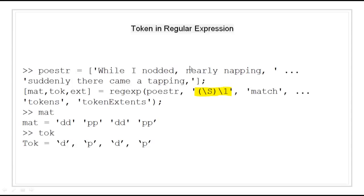Tokens in regular expressions. When using parentheses in a regular expression, we are not only grouping expressions but also designating any matches found for that group as tokens. We can use tokens to match other parts of the same string. For example, to search for identical sequential letters, we capture the first letter as a token using (\S) and then search for a matching character immediately after using \1. The matching strings stored in 'mat' are 'dd', 'pp', 'dd', and 'pp'.